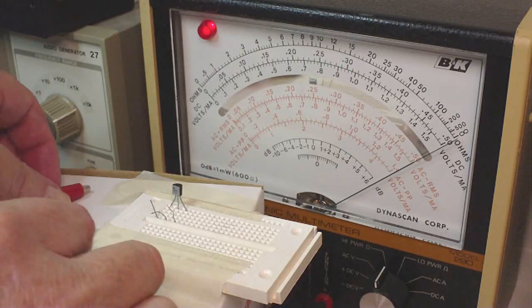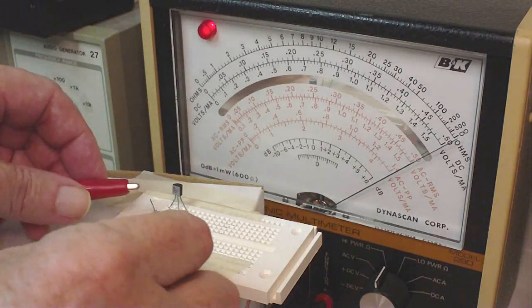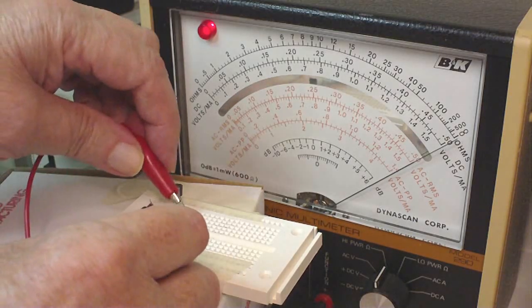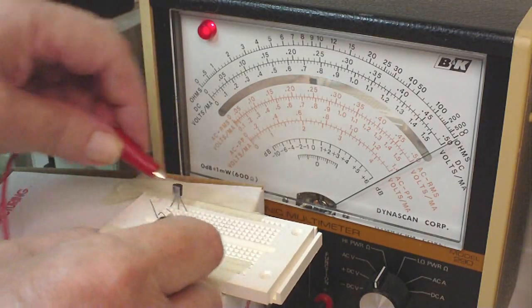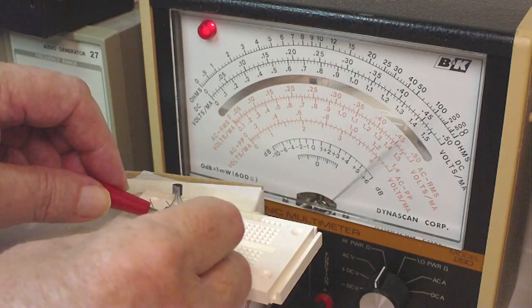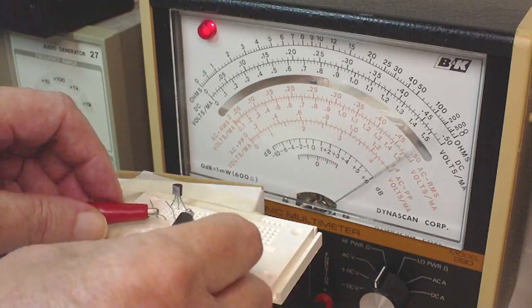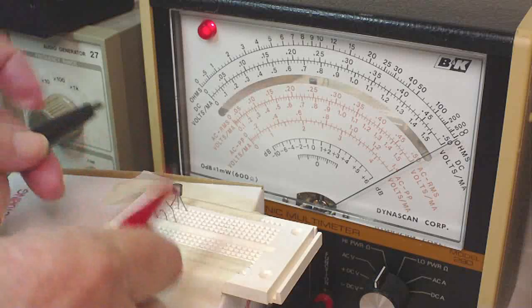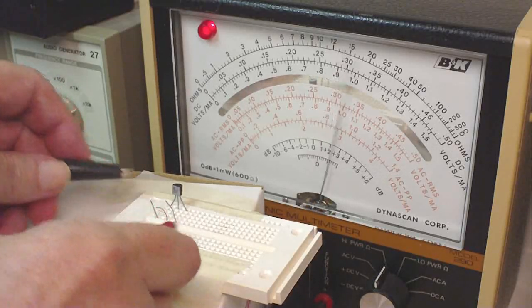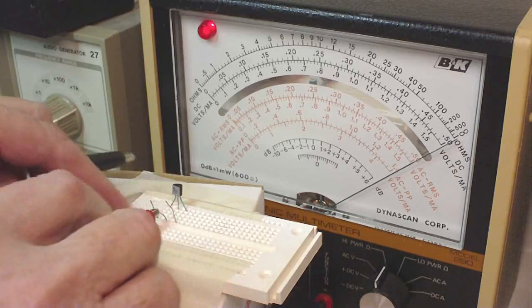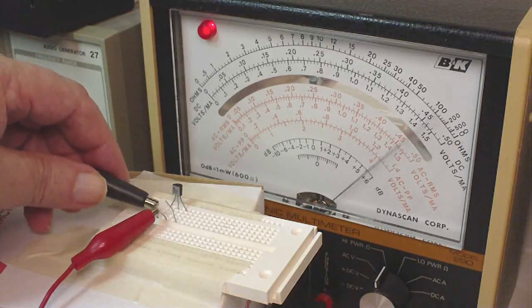Here's another transistor. Nothing there. Nothing there. So that looks like it's the base and it's positive. So this is an NPN.